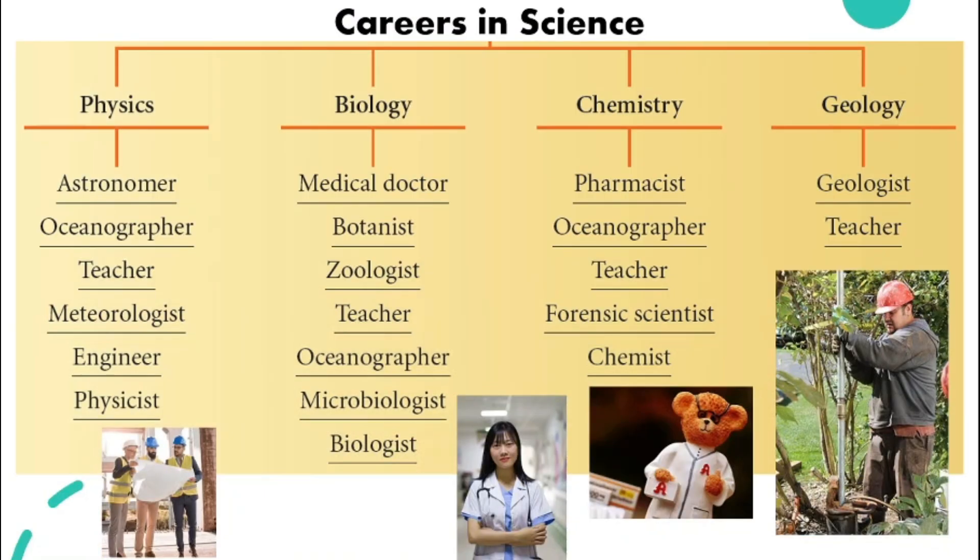According to the different fields of science, they offer different careers in science. You can take a look at this table. You can also look at this table in your textbook at page 7. So, depending on what your interest is and also what you're good at, you can choose your careers accordingly.